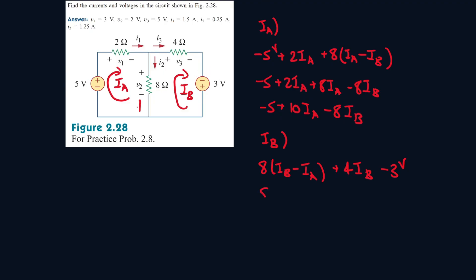Okay, now let's simplify it more. And collecting like terms, we get 12 IB minus 8 IA minus 3.